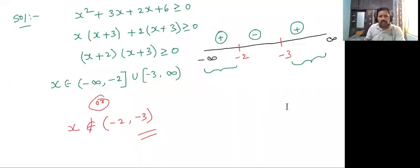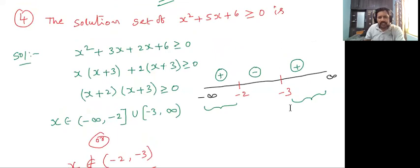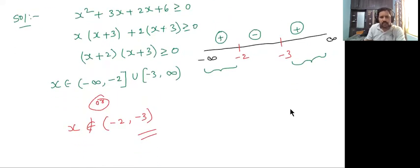So if the given function is greater than or equal to zero, that's why you will get the closed curve at minus 2 and minus 3. So answer is x belongs to minus infinite comma minus 2 closed union closed minus 3 comma infinite.